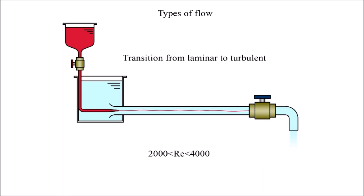If the velocity of flow is increased, at the critical velocity the type of flow changes from laminar to turbulent.